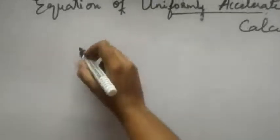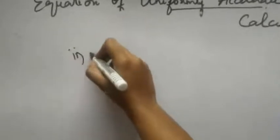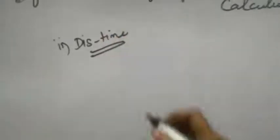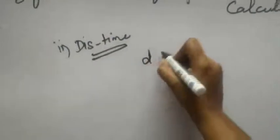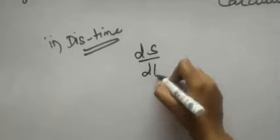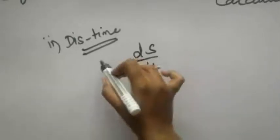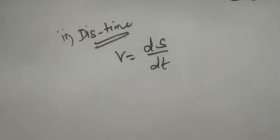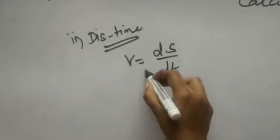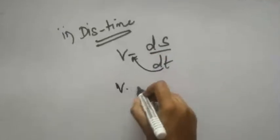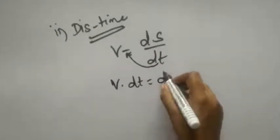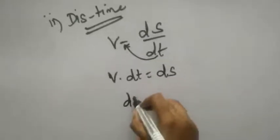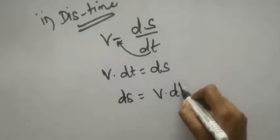For the second equation, we go for the displacement-time relationship. Velocity v is equal to change in displacement by change in time. Bringing dt to the other side, it becomes v into dt equal to ds — or, writing it in inverse, ds equal to v into dt.